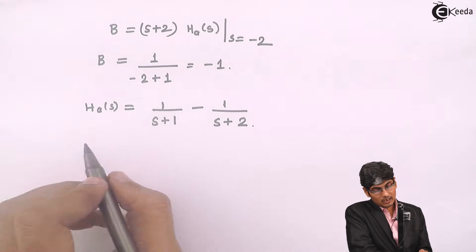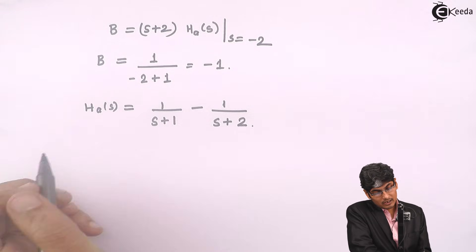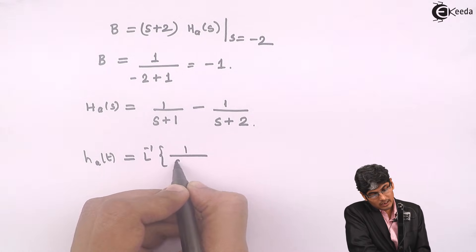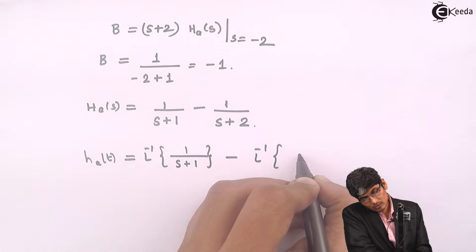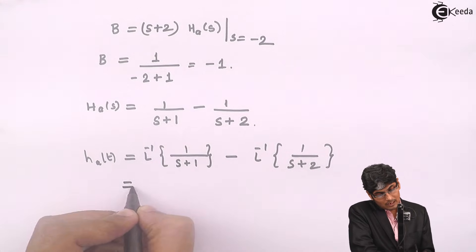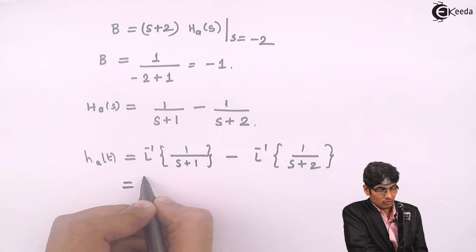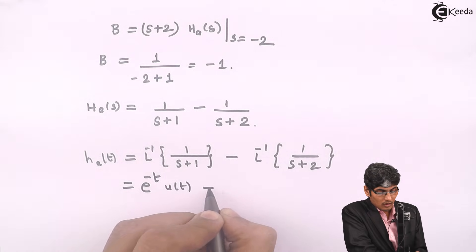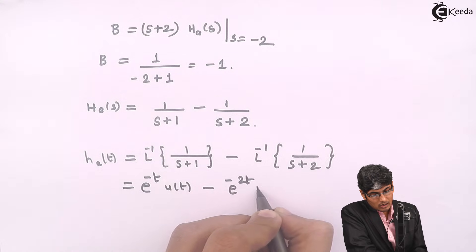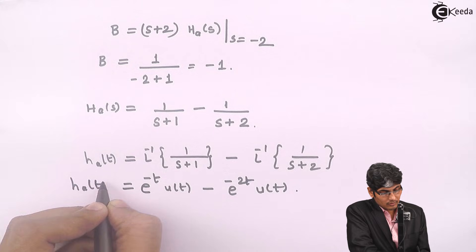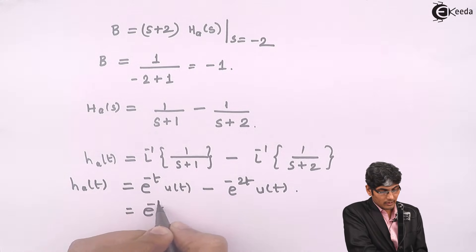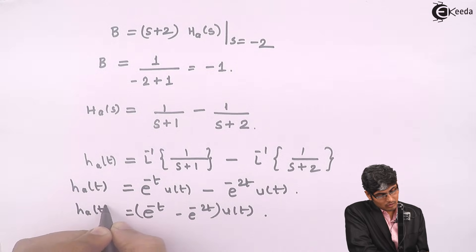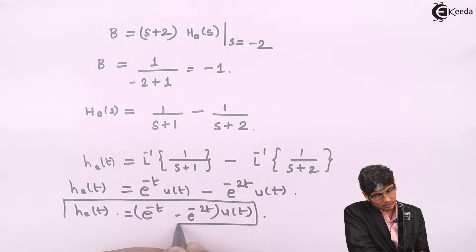Now I can apply the inverse Laplace transform. Applying it, I get H_A(T) = inverse Laplace of 1/(S+1) minus inverse Laplace of 1/(S+2), which gives e^(-t)·u(t) - e^(-2t)·u(t). Pulling out u(T), this is (e^(-t) - e^(-2t))·u(T) = H_A(T).